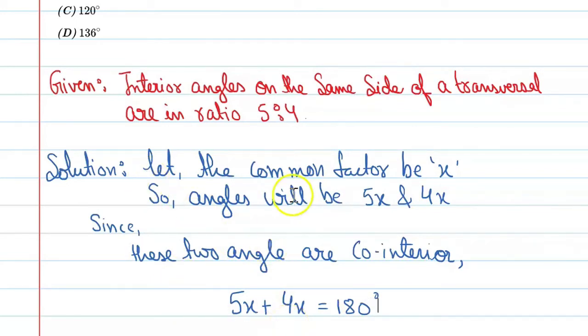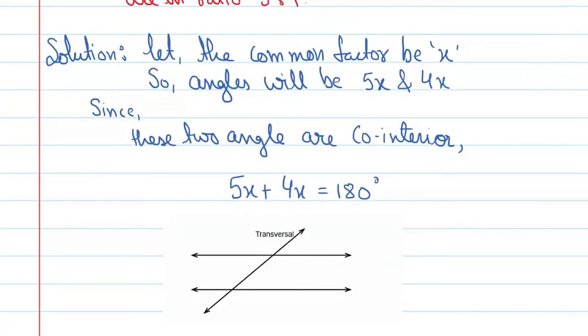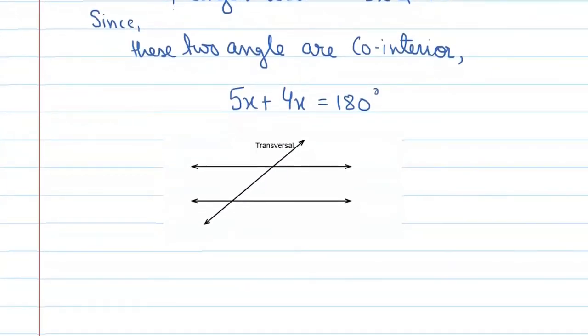Let's take its figure. Students can see that this figure is according to the question. This is the transversal line passing through two parallel lines. We're talking about the interior angles on the same side - one of them is 5x and the second one is 4x. We will find these and then find the largest angle.